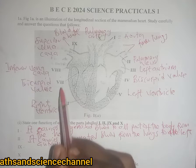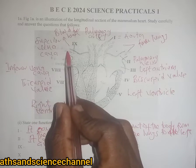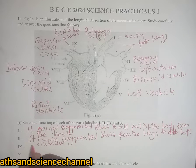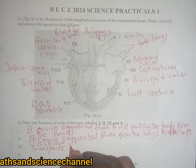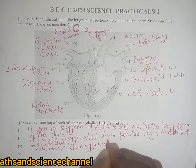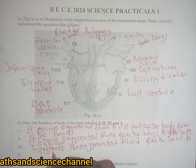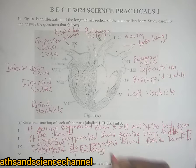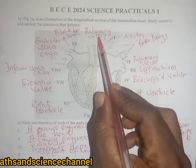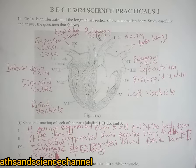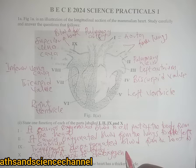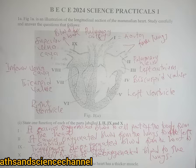Part ix is the superior vena cava. The function of the superior vena cava is that it transports deoxygenated blood from the body to the heart. Part x is the pulmonary artery, and its function is that it carries or transports deoxygenated blood to the lungs.